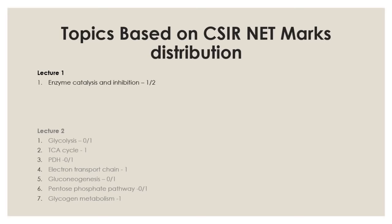We will talk about the mechanism of enzyme catalysis, how enzymes work, and also different types of enzyme-mediated inhibition. Then we will talk about carbohydrate biochemistry — the structure of monosaccharides, disaccharides, and polysaccharides with a few examples. We will also talk about protein biochemistry, specifically the structure of globular and fibrous proteins, with hemoglobin and myoglobin as examples, and particularly the oxygen saturation curve of hemoglobin.